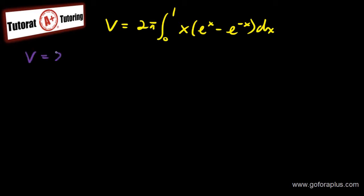The volume equals 2 pi integral from 0 to 1 x e to the x. I'll separate the integral. So dx subtract 2 pi integral from 0 to 1 x to the e to the minus x dx. So I have the two integrals.